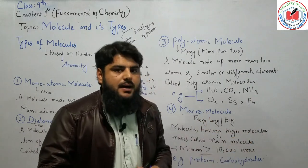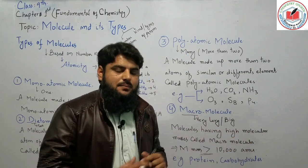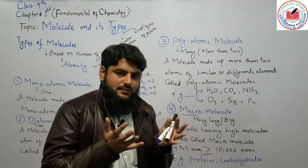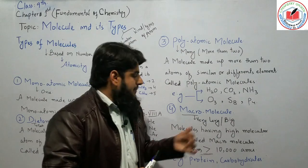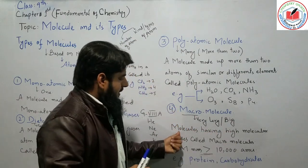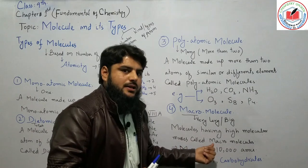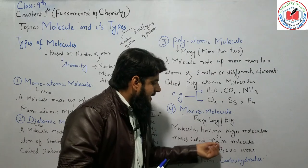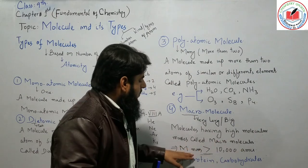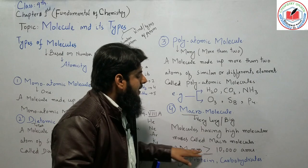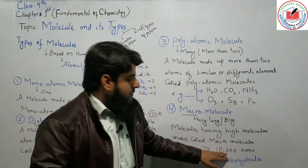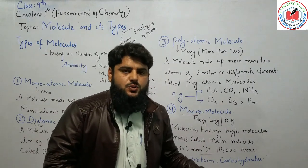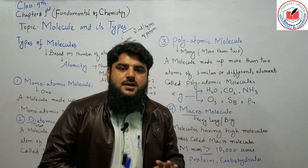A molecule having a very high molecular mass is called a macromolecule. A macromolecule has a molecular mass of 10,000 or more. Examples of macromolecules include proteins, carbohydrates, hemoglobin, and synthetic polymers.